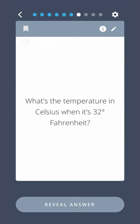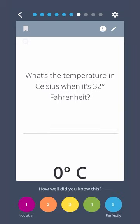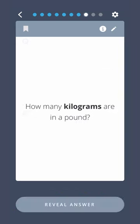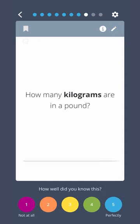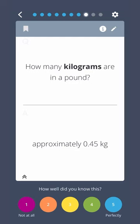What's the temperature in Celsius when it's 32 degrees Fahrenheit? 0 degrees Celsius. How many kilograms are in a pound? Approximately 0.45 kilograms.